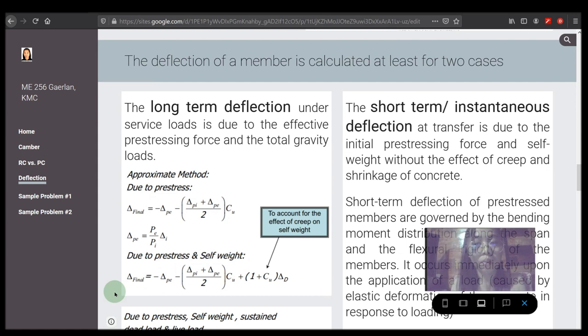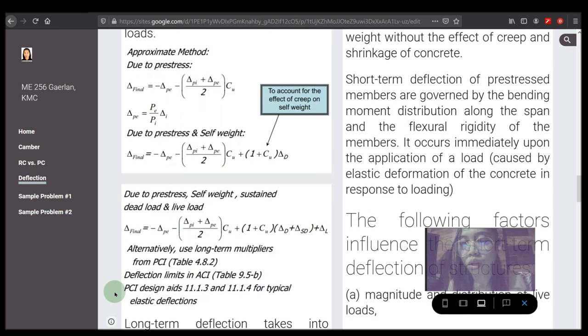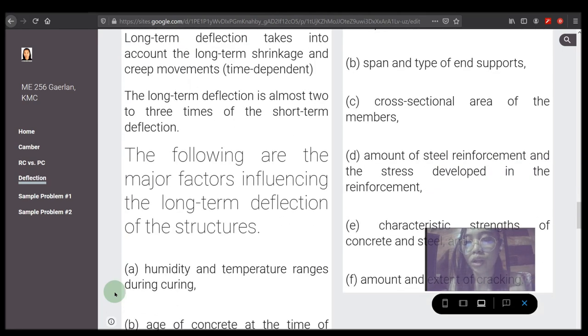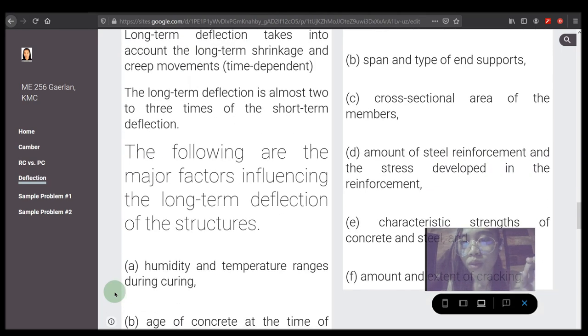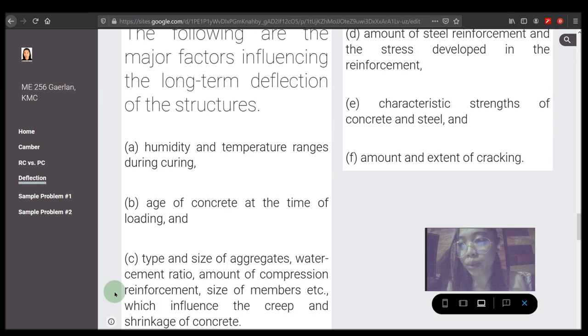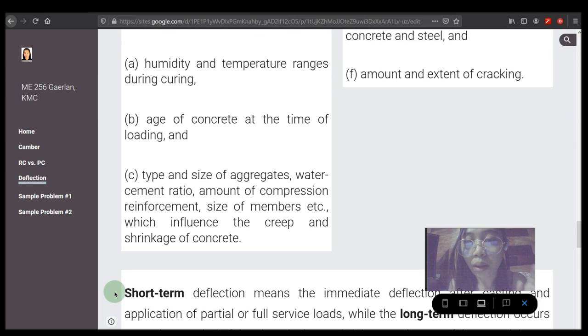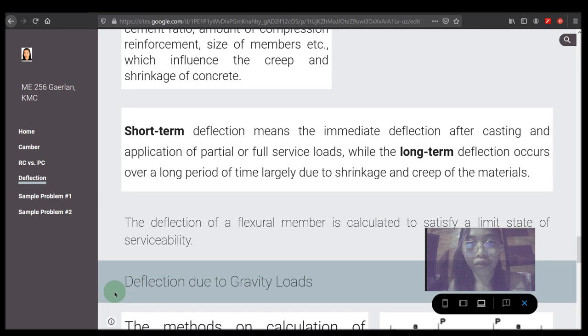While the short term or the instantaneous deflection, the influencing factors are magnitude and distribution of live loads, span and type of supports, cross-sectional area of the members, amount of steel reinforcement and the stress developed in the reinforcement, characteristic strengths of concrete and steel, and amount and extent of cracking.